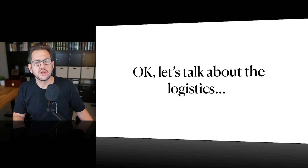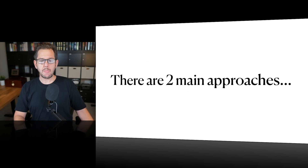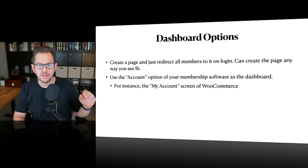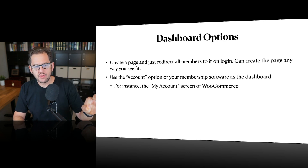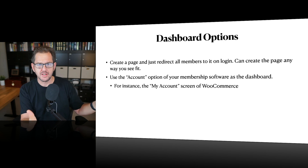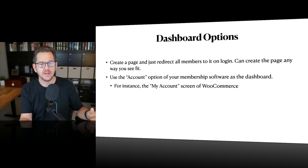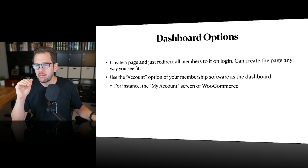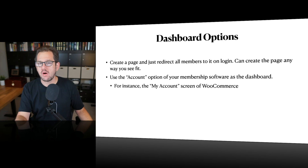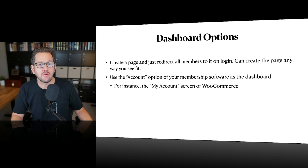Let's talk about a few of the logistics. There are two main approaches. First, you can create a page — just go to the list of pages inside WordPress, create a page manually, call it dashboard, put whatever you want on that screen, and then make sure that when people log in, they route to that. It's that simple.